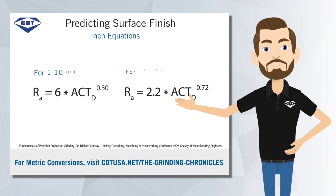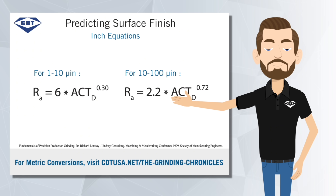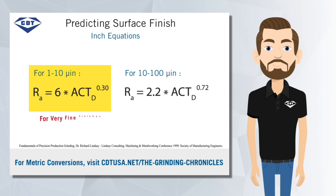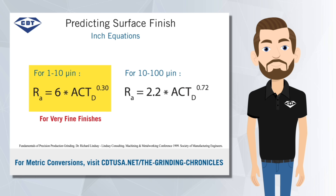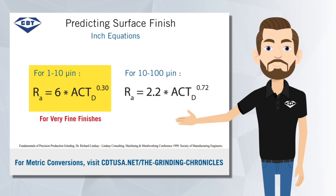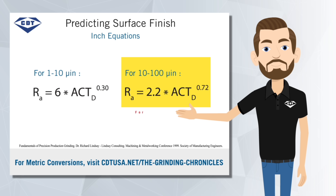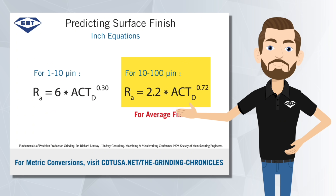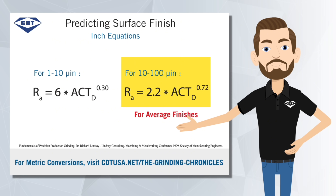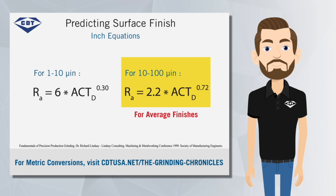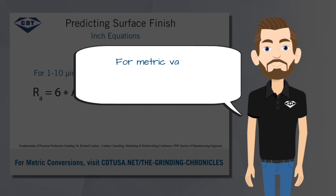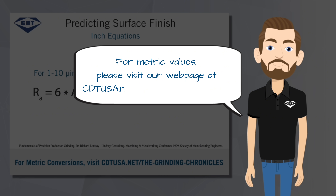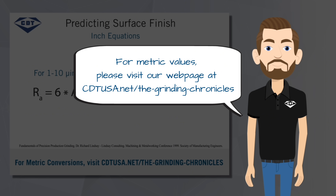Once you've calculated ACT, there are two simple equations you can use to predict your surface finish RA number. For very fine finishes between 1 and 10 micro-inches, your RA is equal to 6 times ACT raised to the 0.3 power. For finishes in the 10 to 100 micro-inch range, RA equals 2.2 times ACT raised to the 0.72 power. These equations show the values for calculations in inches. For metric values, please visit our webpage at cdtusa.net/thegrindingchronicles.